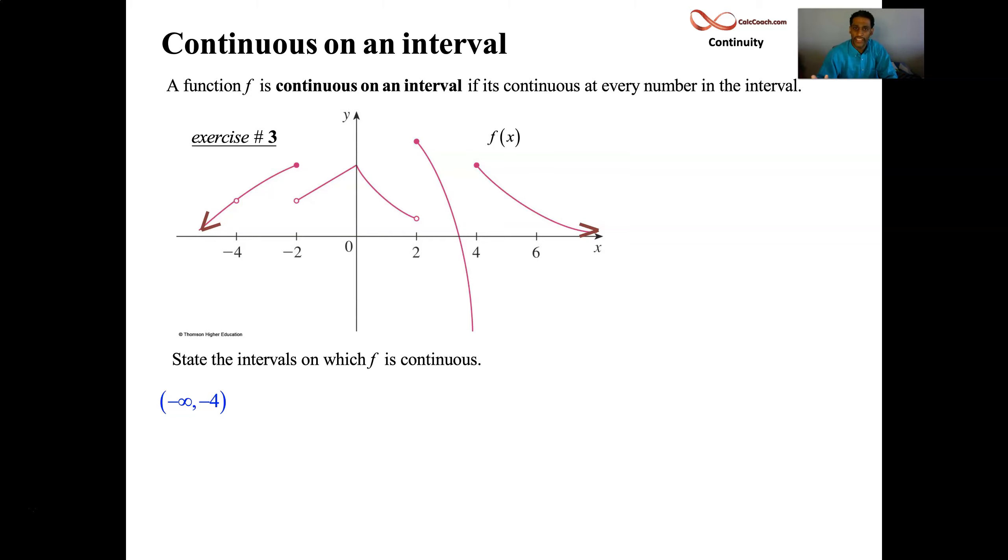Officially, if you are drawing the graph of this function and you have to lift whatever writing utensil you're using in order to continue drawing, then your function is broken there. Your function is discontinuous, basically. All right, so I'm drawing the graph of this function. Something's going on at negative 4. I have to stop writing, OK? And it's because the function is discontinuous there.